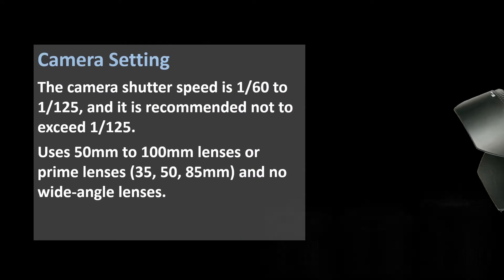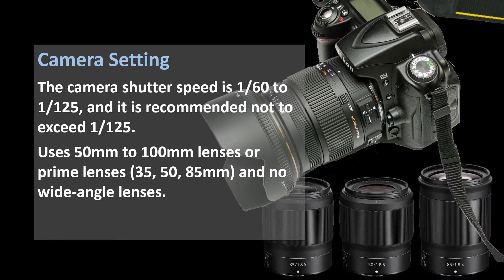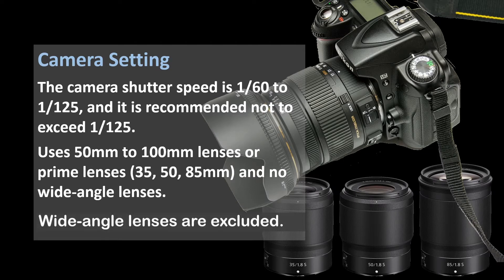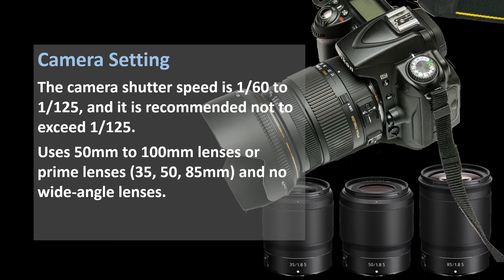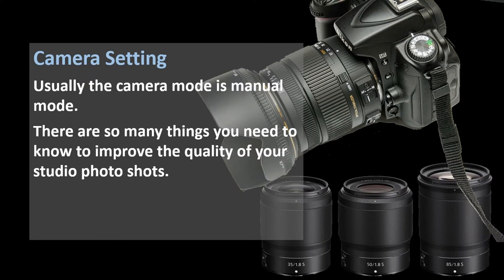The camera shutter speed is 1/160 to 1/125 second, and it is recommended not to exceed 1/125 seconds. Use 50 to 100 millimeter lenses, or 35, 50, 85 millimeter prime lenses. Usually the camera mode is manual mode. There are so many things you need to know to improve the quality of your studio photo shots.